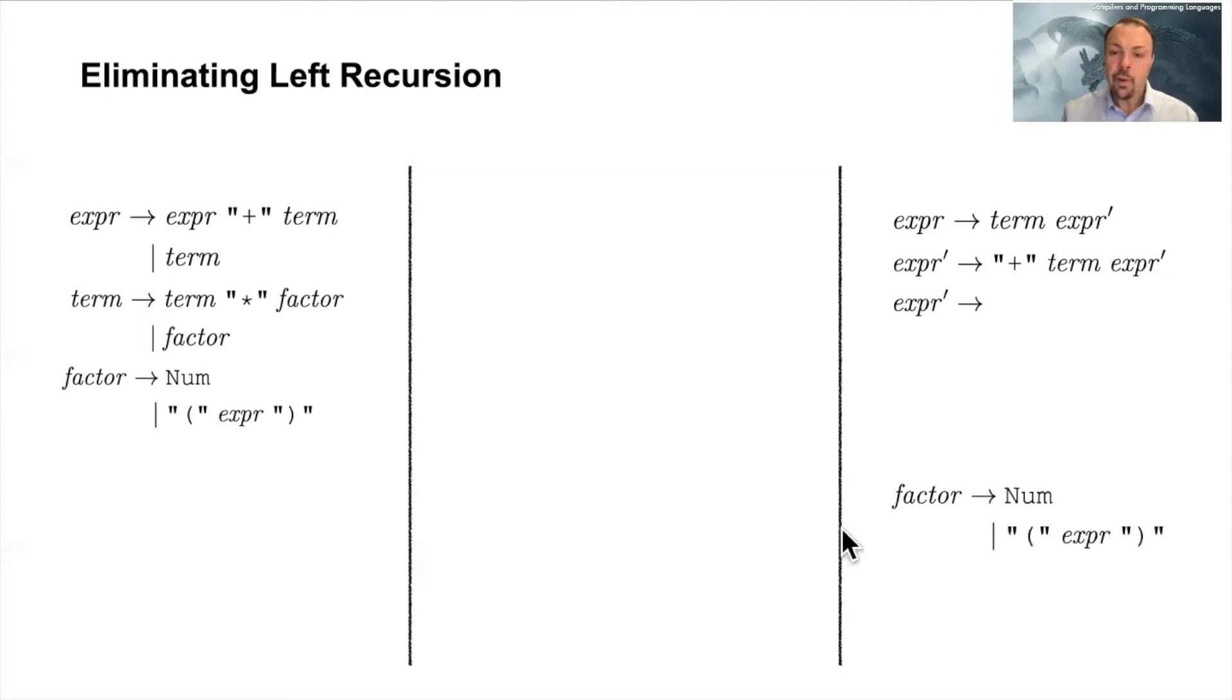In the bottom we have factor, and as you can see the factor here and here they are the same. So we don't do anything, and that's because we don't have any recursion at all here that is left recursive.